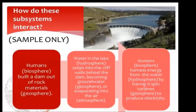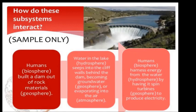How do these subsystems interact? For example, humans — part of the biosphere — build a dam out of rock material, which is part of the geosphere. Water in the lake, the hydrosphere, seeps into the cliff wall behind the dam, becoming groundwater or evaporating into the air — that involves the geosphere and atmosphere. Then humans harness energy from the water in the hydrosphere by having it spin turbines to produce electricity. There are many more interactions among the subsystems.